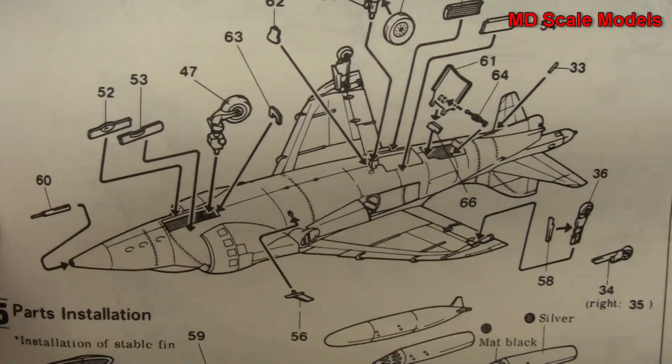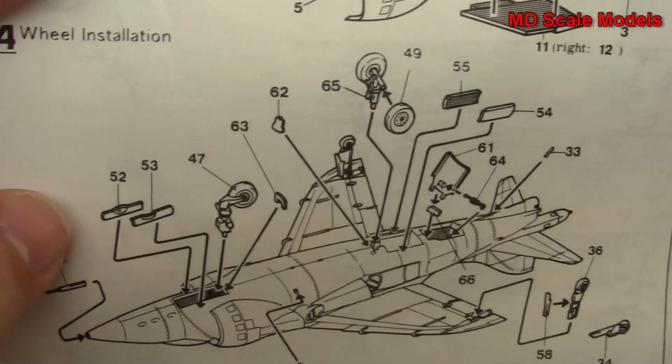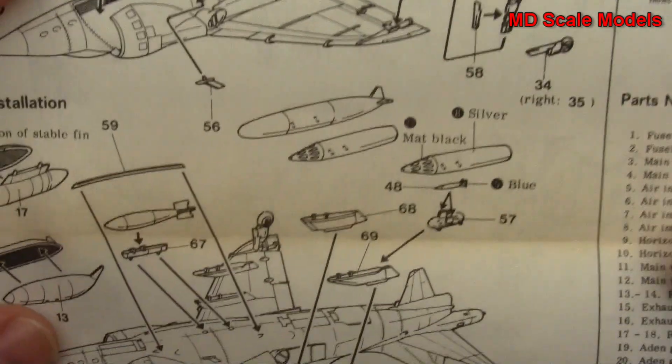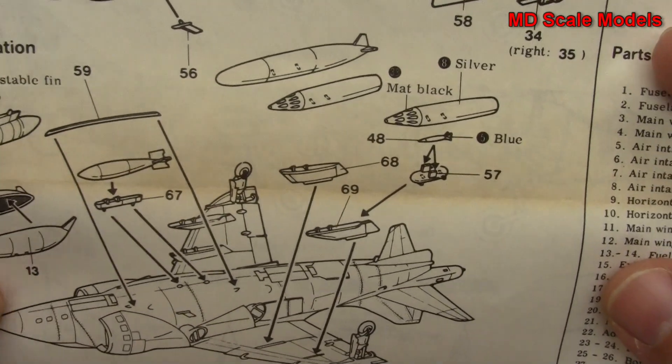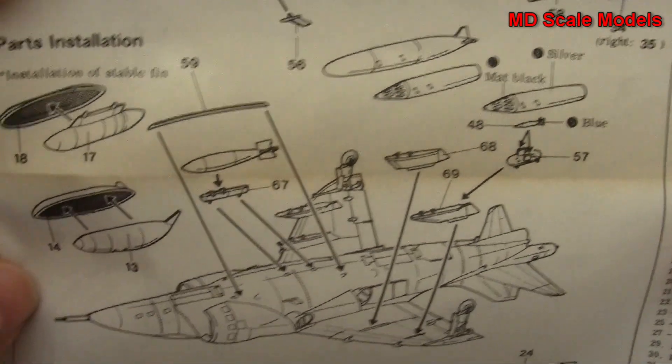Next we put our wheels on, as well as our wheel well covers, and then we're going to do our pylons and fuel tanks and ammunition.